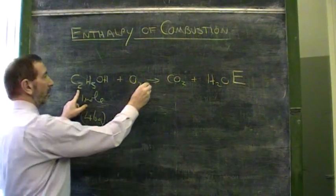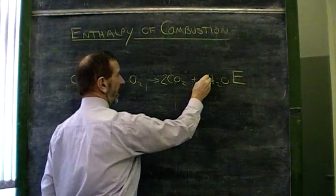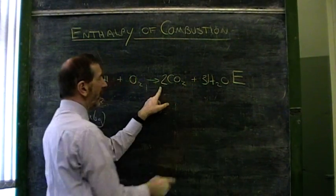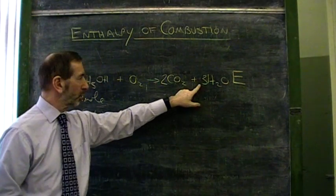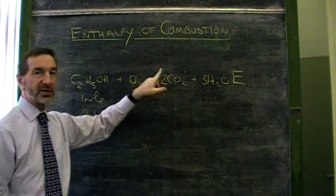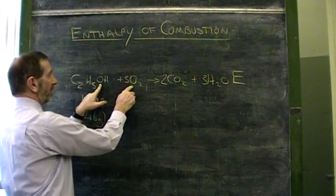We've got two carbons to begin with and two in there. We've got six hydrogens at the start and need to end up with six hydrogens. There are four oxygens in here and three oxygens there. That's a total of seven oxygens. We must have started with seven oxygens. There's one of them, there's the other six.